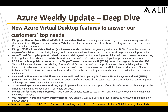Azure Virtual Desktop Insights at scale is now generally available, allowing reporting of key information across resources in one view. RDP Shortpath for public networks using the STUN protocol is now generally available. RDP Shortpath improves transport reliability of virtual desktop connections over public networks by establishing a direct UDP-based data flow between the remote desktop client and the session host. Additionally, TURN-based symmetric NAT support for RDP Shortpath using the TURN relay protocol is now in public preview. This feature is an extension of RDP Shortpath, establishing a UDP connection indirectly using a relay.